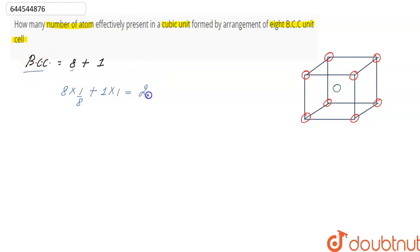And we have to find out for total eight BCC unit cells. So for eight BCC unit cells, number of atoms effectively present will be eight into two, that is total 16 atoms are effectively present in the cubic unit.